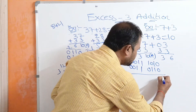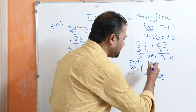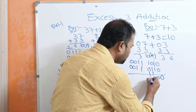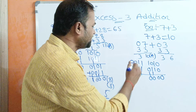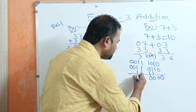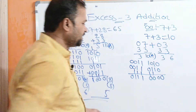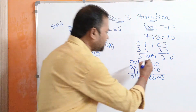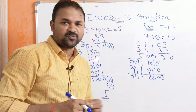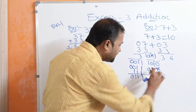Now let us add these two XS3 binary numbers: 0 plus 0 is 0; 1 plus 1 is 0 with carry 1; 1 plus 1 is 0 with carry 1; 1 plus 1 is 0 with carry 1. Then with the carry chain: giving 1 1 and 1 1 1 0 in the result.